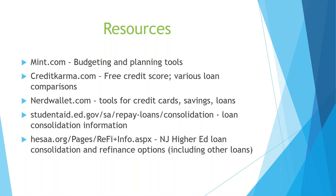Here are some resources for you: Mint.com has budgeting and planning tools. Credit Karma is advertised on TV and is a legitimate free credit score service that also gives information about loan comparison. NerdWallet provides tools for credit card research, savings, and loans. I've listed the studentaid.ed.gov website for loan consolidation, and you can also get information at the New Jersey state HESAA website — they are offering a new refinance program for New Jersey borrowers that would allow you to include other loans. Use the resources available to you, ask questions, and get started on a secure path to save for yourself and for the future.